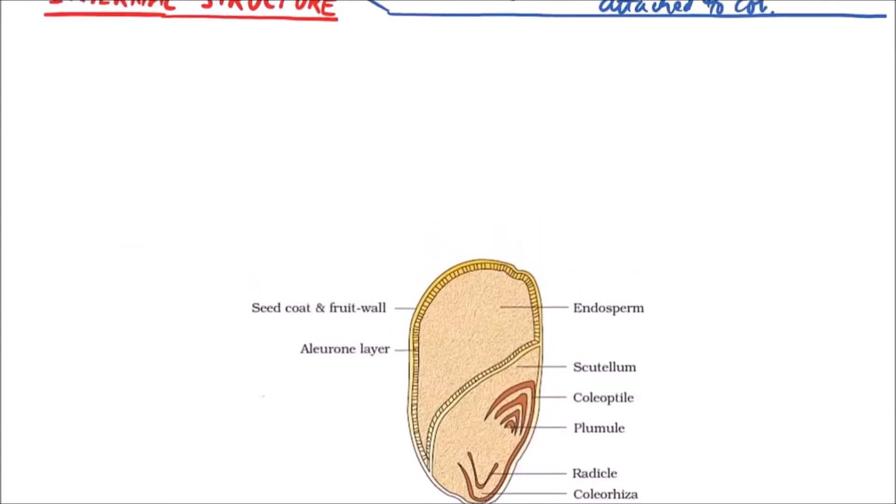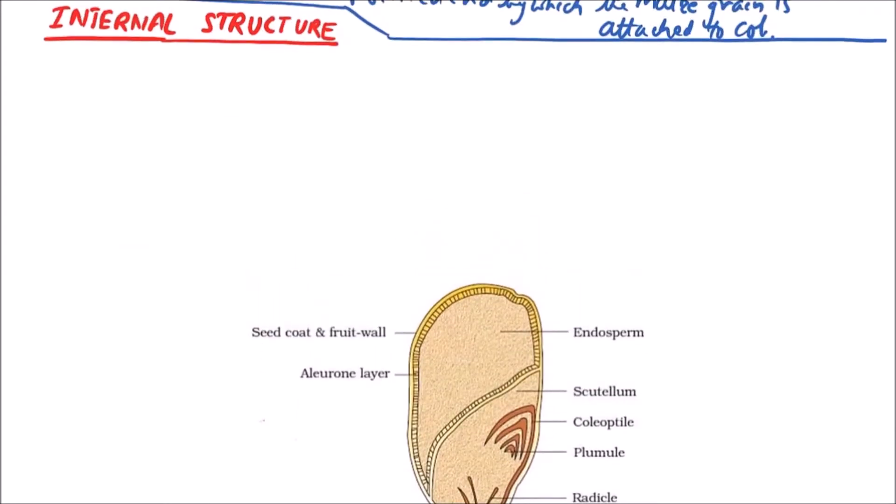If we take the section of internal structure, then the outermost covering is seed coat plus fruit wall. Here the seed coat is testa while the fruit wall is pericarp. This is representing the testa plus pericarp. It is thin but hard covering. Now the next region is aleuron layer.